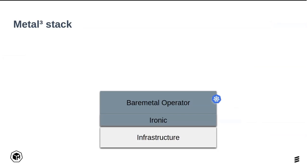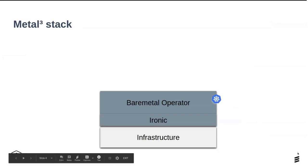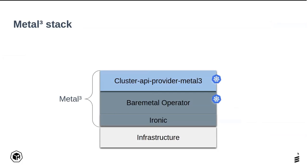The next component in the Metal Cube stack is called Cluster API Provider Metal Cube. Bare Metal Operator can be used separately — you don't have to use any other Metal Cube components to do the management, as the main component is the Bare Metal Operator. But if you want to integrate your bare metal cluster management with other projects like Cluster API, then you use the Cluster API Provider Metal Cube, which is the plugin that lets you plug your management into the Cluster API project. Both Bare Metal Operator and Cluster API Metal Cube run inside the Kubernetes cluster.